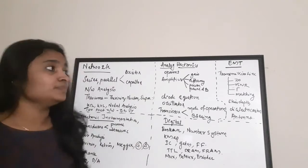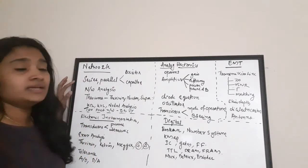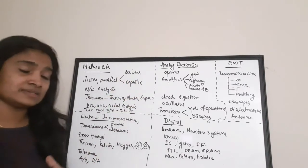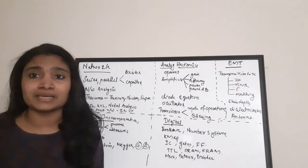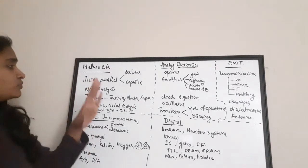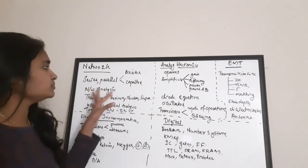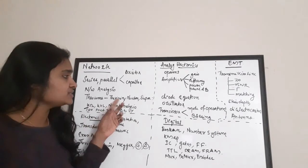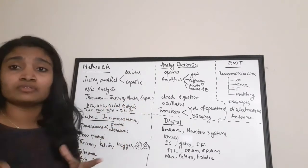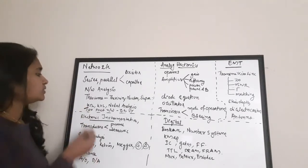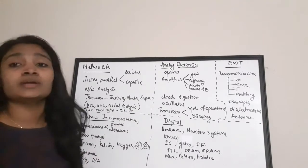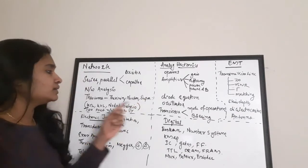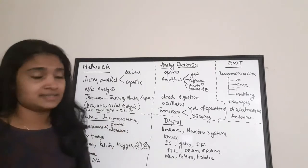The first subject is Network Theory. You have to mainly concentrate on series and parallel connections for resistors and capacitors — you will be given some resistor or capacitor combination and have to find the equivalent value. Also network analysis, where you analyze a given network for current or voltage. The main theorems to concentrate on are Thevenin's theorem, Norton's theorem, and Superposition theorem. Very importantly, KCL, KVL, and Nodal analysis — I have not seen any question paper without at least one question from this area.